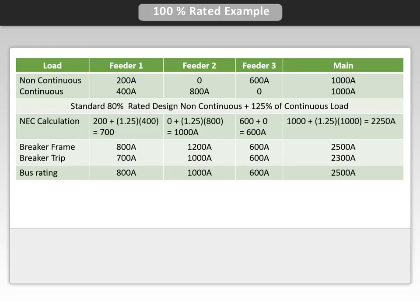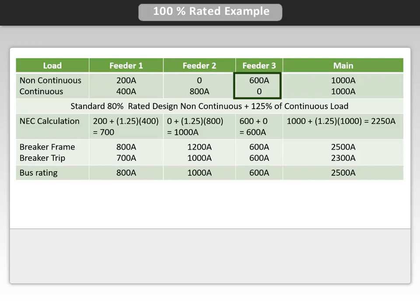Again, since 1,000 amps is not a standard rating, we must use a 1,200 amp frame with a 1,000 amp trip unit. Feeder number 3 has a 600 amp non-continuous load and therefore does not have to be derated.